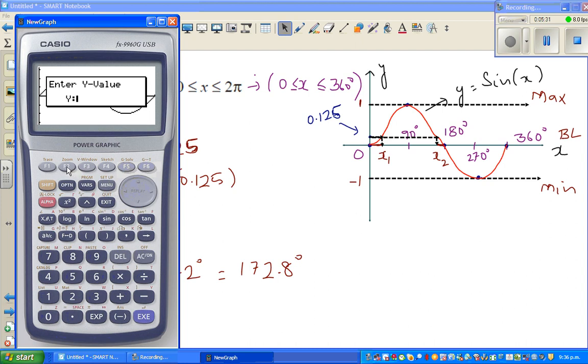So when y is 0.125, that's 7.2 degrees - this is 7.2 degrees away from 0. The other angle would be here, which is 7.2 degrees to the left of 180, which is 172.8.